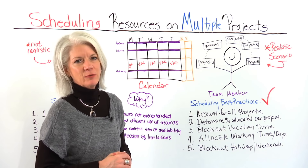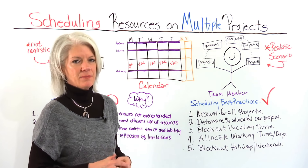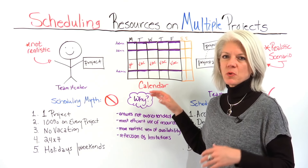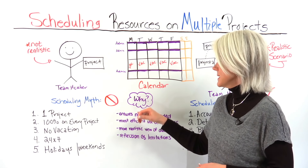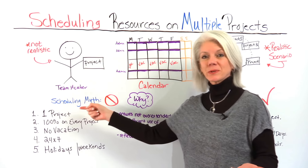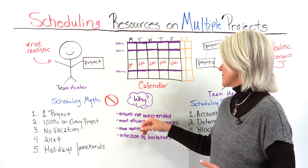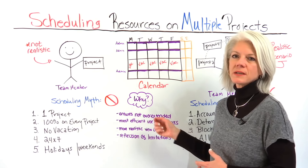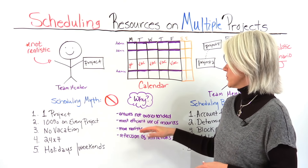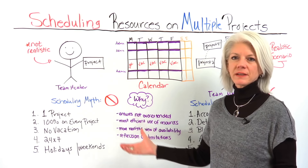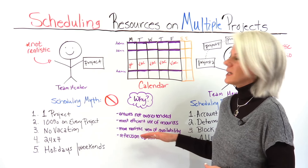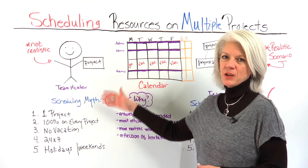When you do this, you're accounting for more realistic hours, and the reason we go to this more granular level is to ensure that we are not over-extending our resources. It also allows us to make more efficient use of all the resources on our project, gives us a more realistic view of their availability, and reflects the limitations they may be working under.